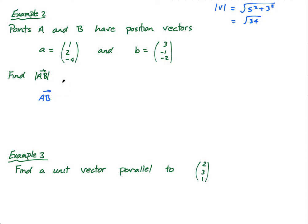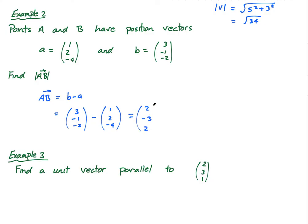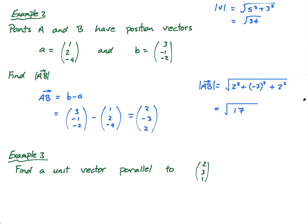The way I find AB — hopefully you remember this from the previous lesson — AB is b minus a, provided these are position vectors, and they are because it says so. So AB is (3, -1, -2) minus (1, 2, -4), which gives us: 3 minus 1 is 2, negative 1 minus 2 is negative 3, and negative 2 minus negative 4 is 2. So AB is (2, -3, 2). Then the magnitude of AB is the square root of 2 squared plus 3 squared plus 2 squared, which is the square root of 4 plus 9 plus 4, the square root of 17.